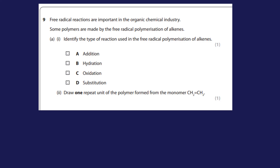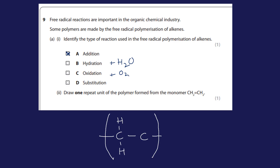Question nine: free radical reactions are important in industry; some polymers are made by free radical polymerization of alkenes. Identify the type of reaction: it's addition polymerization, because you are adding monomers together. It's not hydration (adding water), not oxidation (adding oxygen), and not substitution (swapping places). To draw a repeat unit, break the double bond and draw bonds coming out from brackets — whatever groups were there remain, so CH2–CH2 becomes a CH2 unit in brackets.